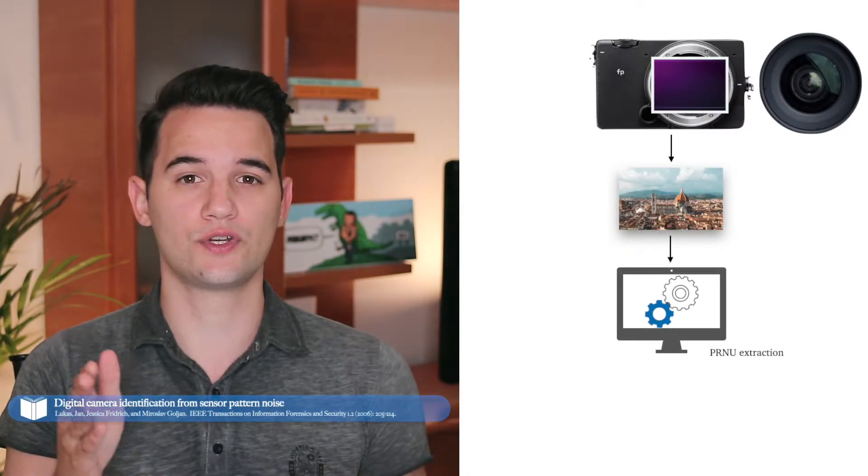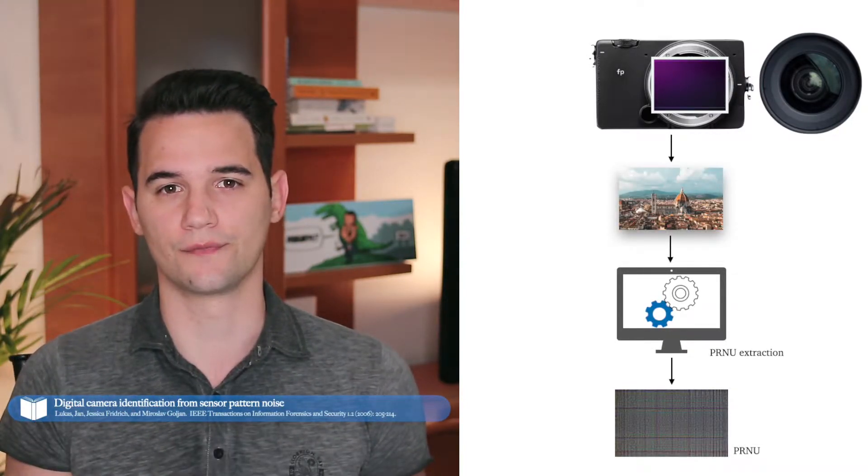Hi and welcome back to this new episode of Engineering, or just welcome — it depends if you survived the first one. In case you didn't see it, the link is in the description below. So PRNU — we introduced it in episode 1, and today we will have the chance to discuss it a bit better. First of all, what is PRNU? PRNU, or Photo-Response Non-Uniformity, is a scant and invisible residual introduced by the sensor of the device we are using every time we take an image or record a video.